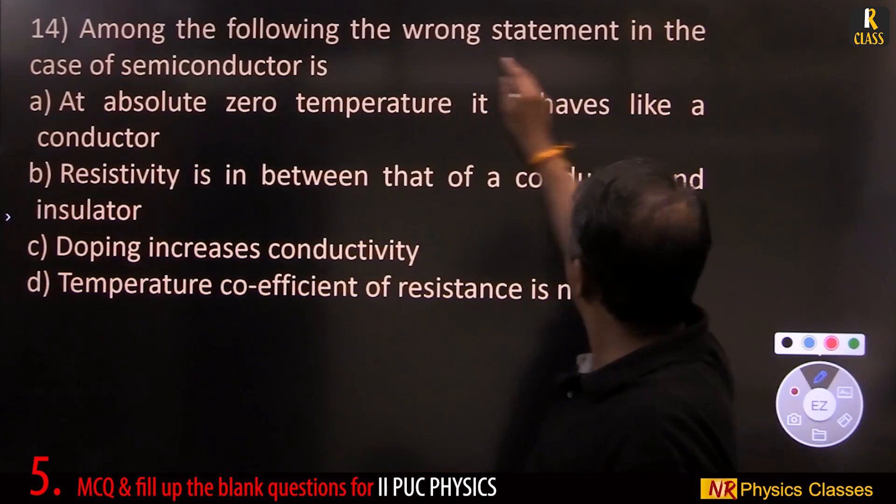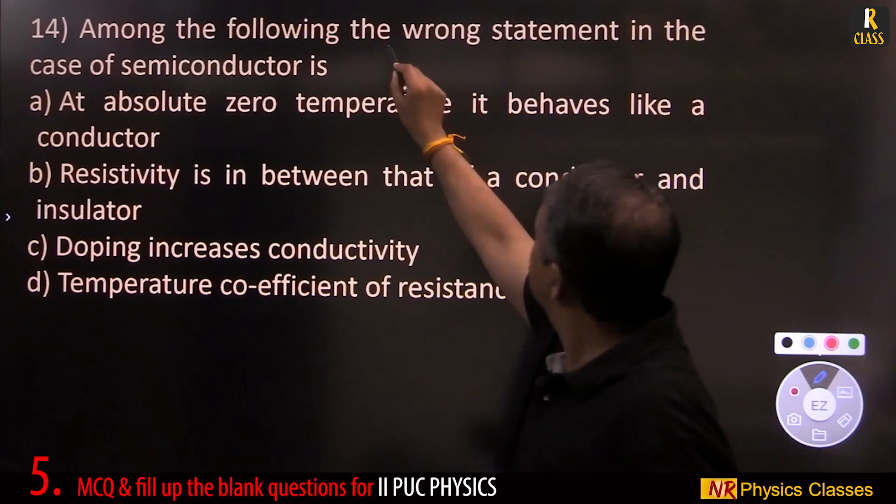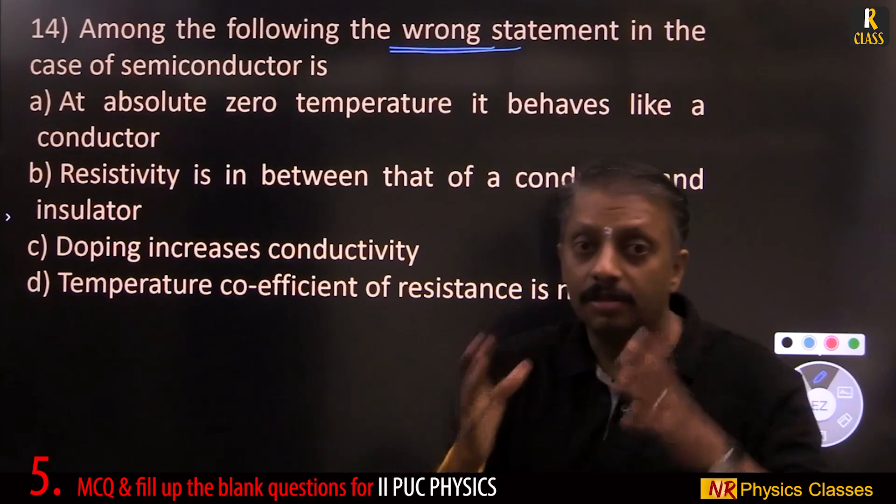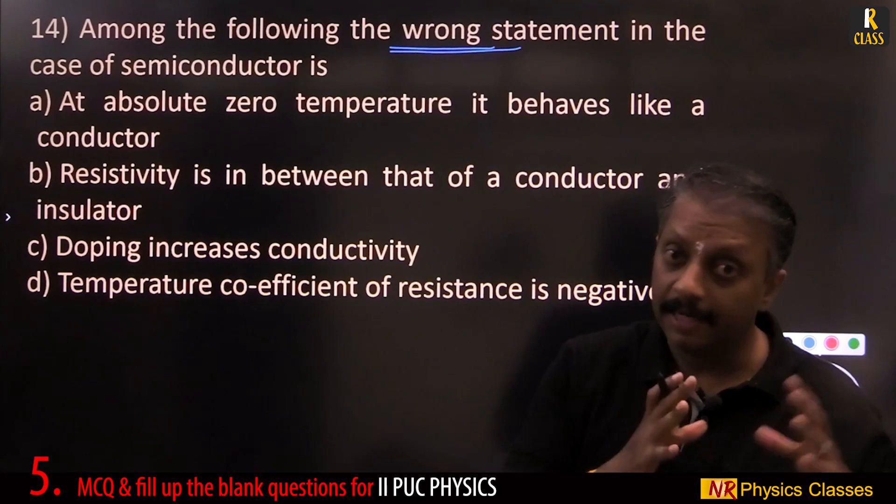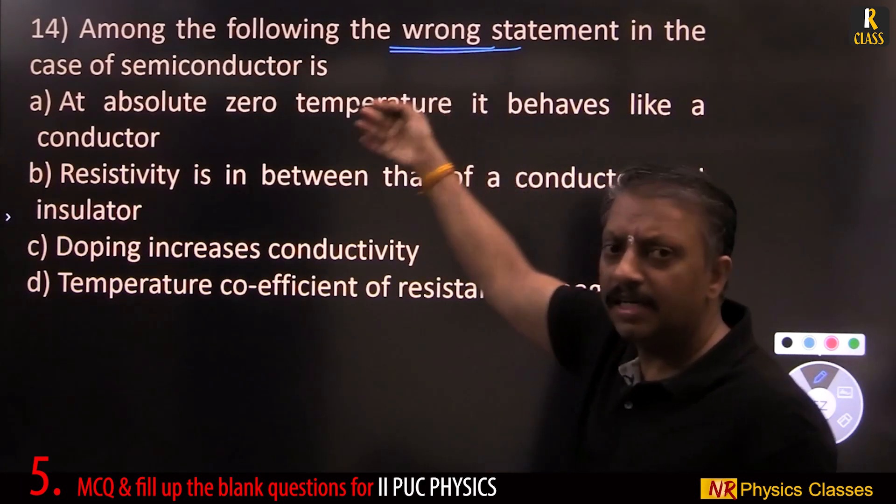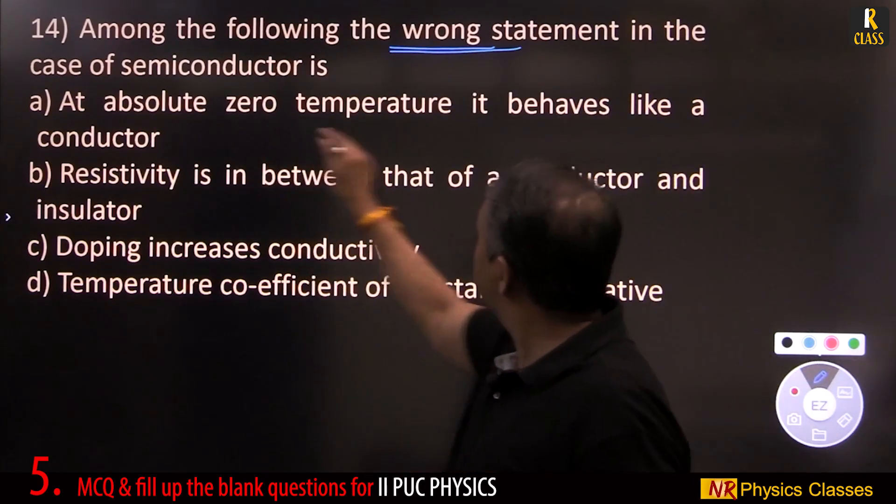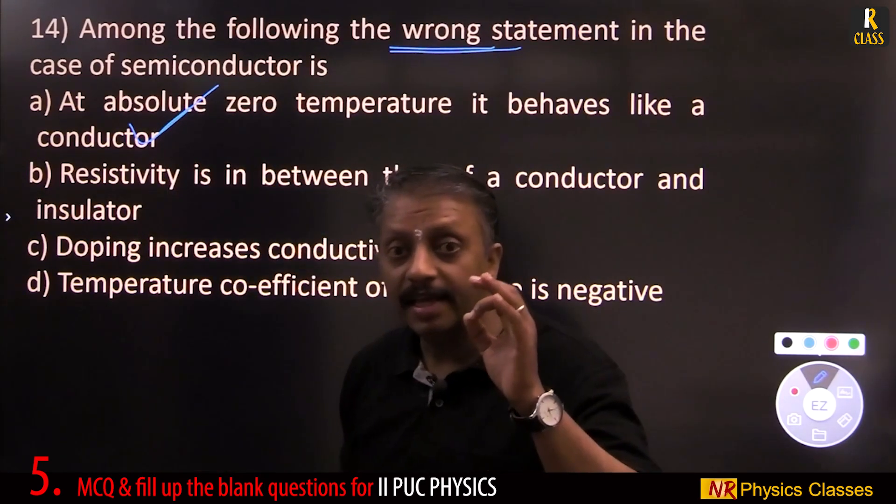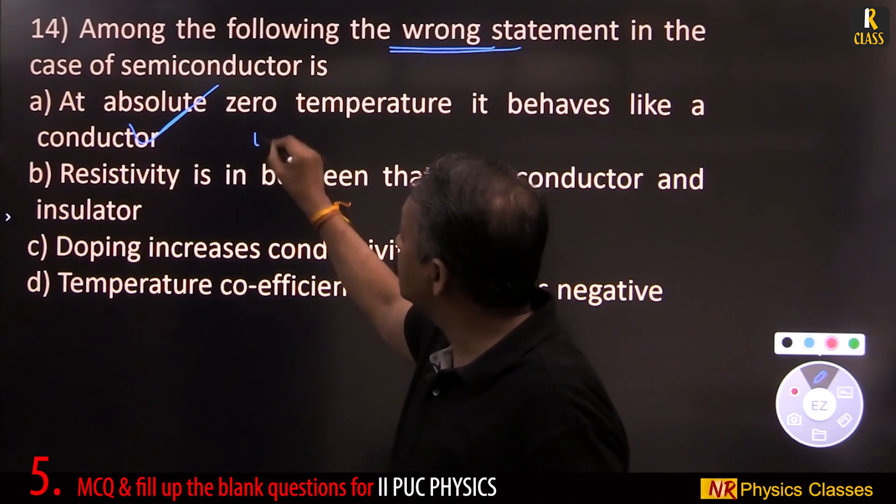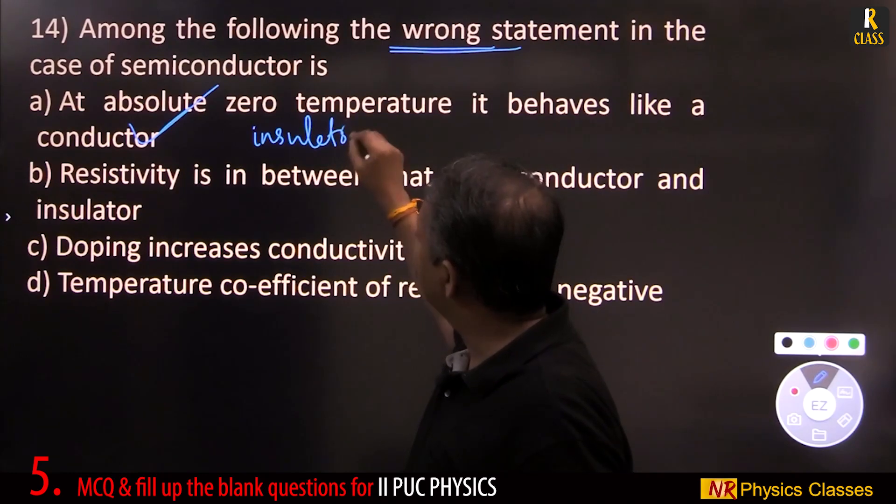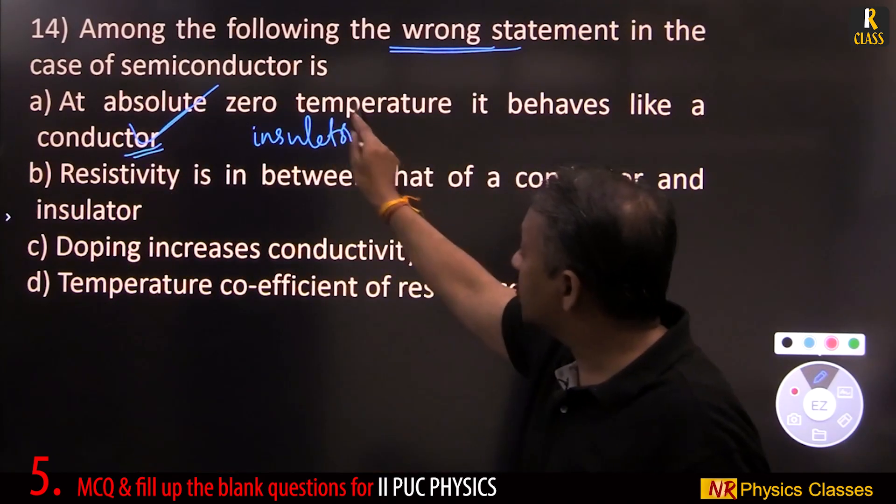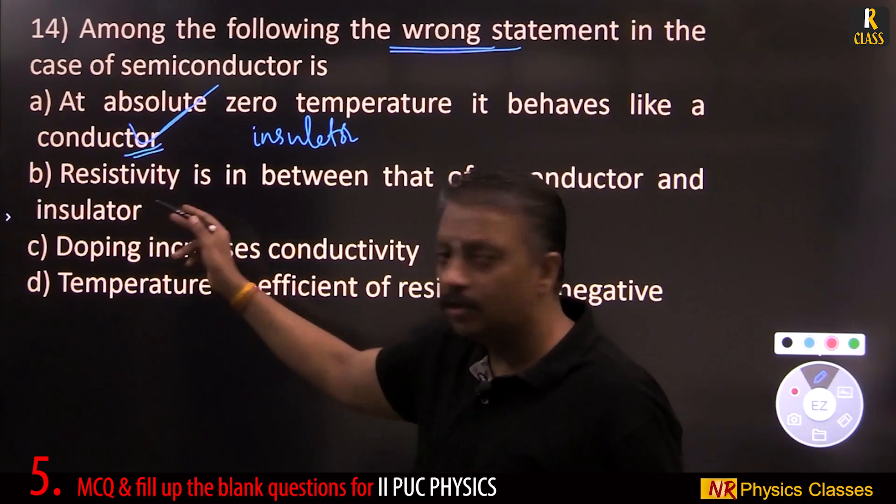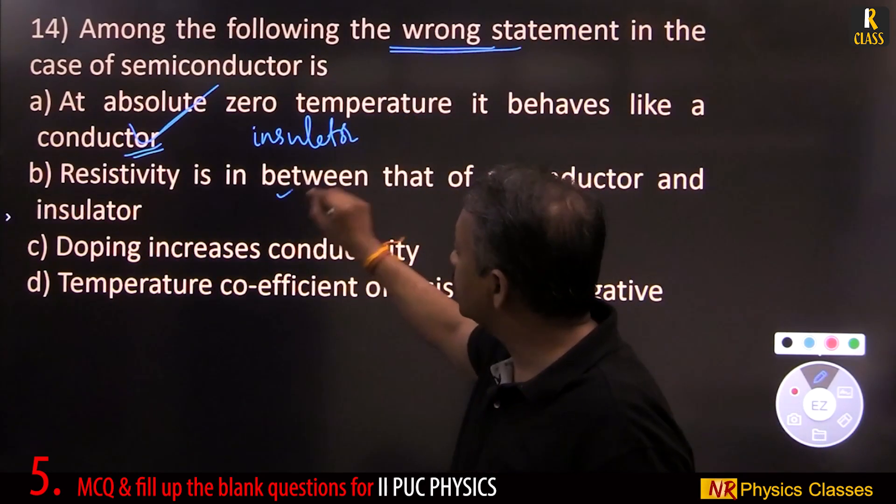Among the following, the wrong statement in the case of semiconductors is - students, please underline wrong. Because usually when we see a question, we always think for or search for the right statement or right answers. So, if there is wrong, please underline that wrong and then try to get the answer. At absolute zero temperature, it behaves like a conductor. This is wrong statement because it behaves like an insulator. Resistivity is in between that of conductor and insulator. True. That is why it is called semiconductor.